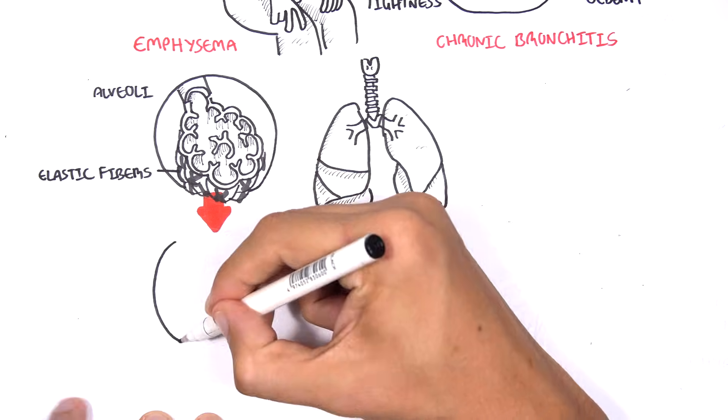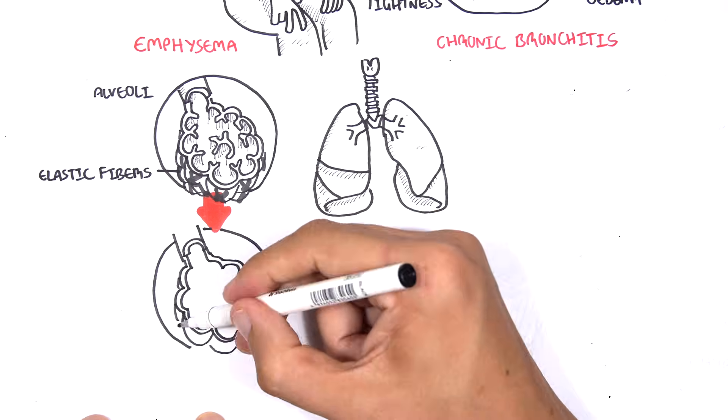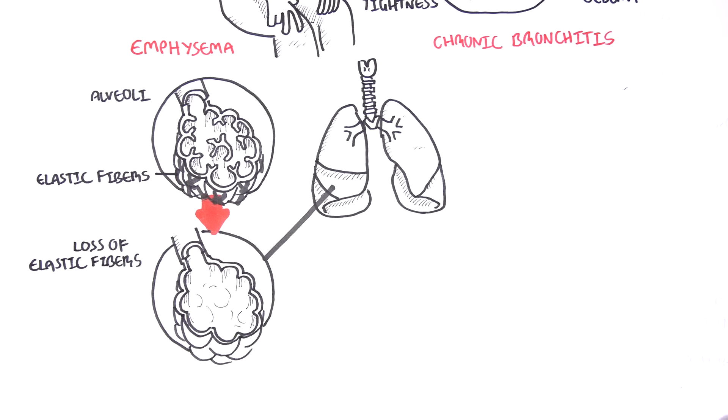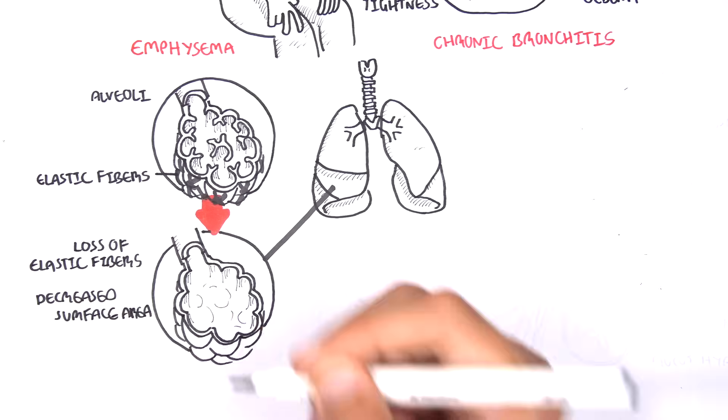However, in emphysema, what we see is a loss of elastic fibers. You also have a decrease in surface area of the alveoli. This could potentially lead to a collapsed alveoli.